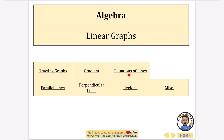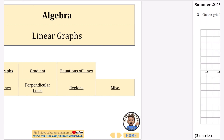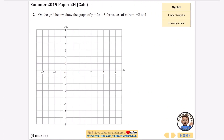In this video I'm going to start off by doing drawing graphs, gradient, and equations of lines. In the next video I'll be looking at parallel, perpendicular, regions, and one random question at the end. We'll get started with the first question, which is about drawing graphs on a calculator paper. It says: on the grid below, draw the graph of y = 2x − 3 from x = −2 to x = 4.